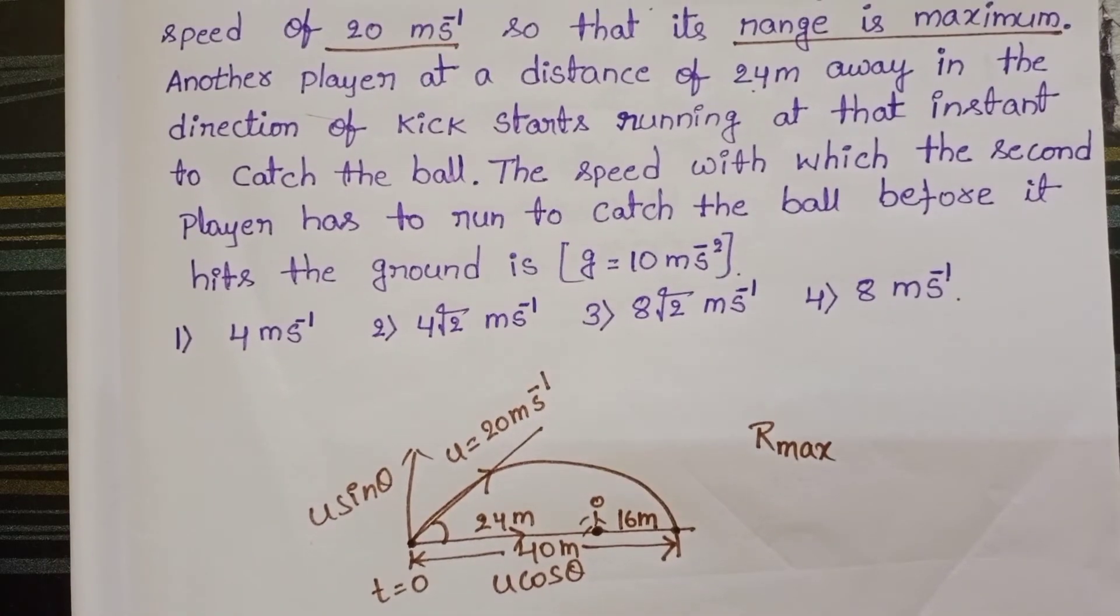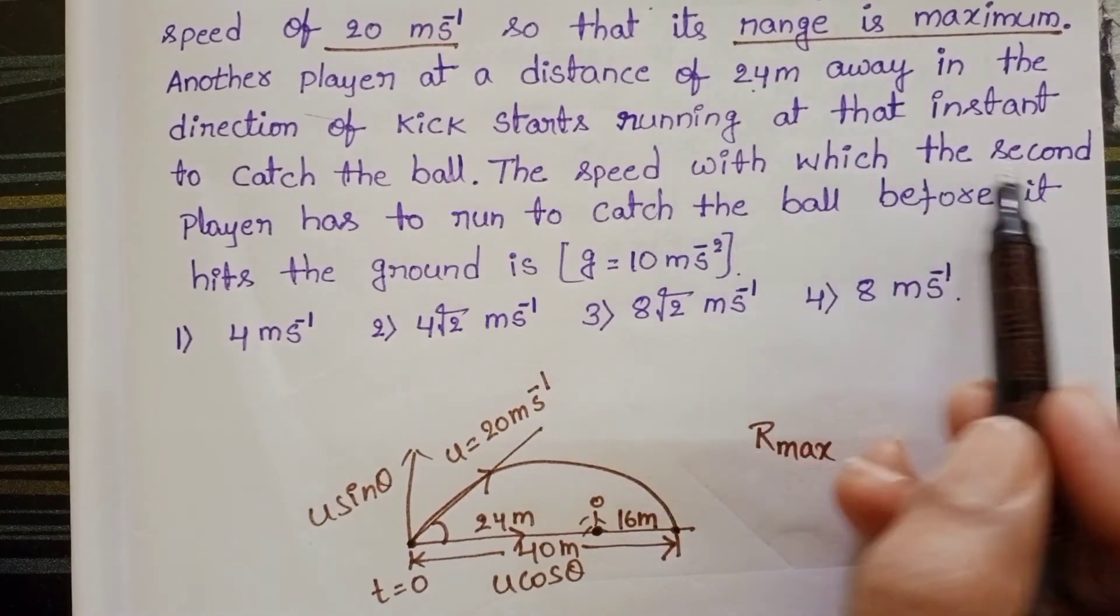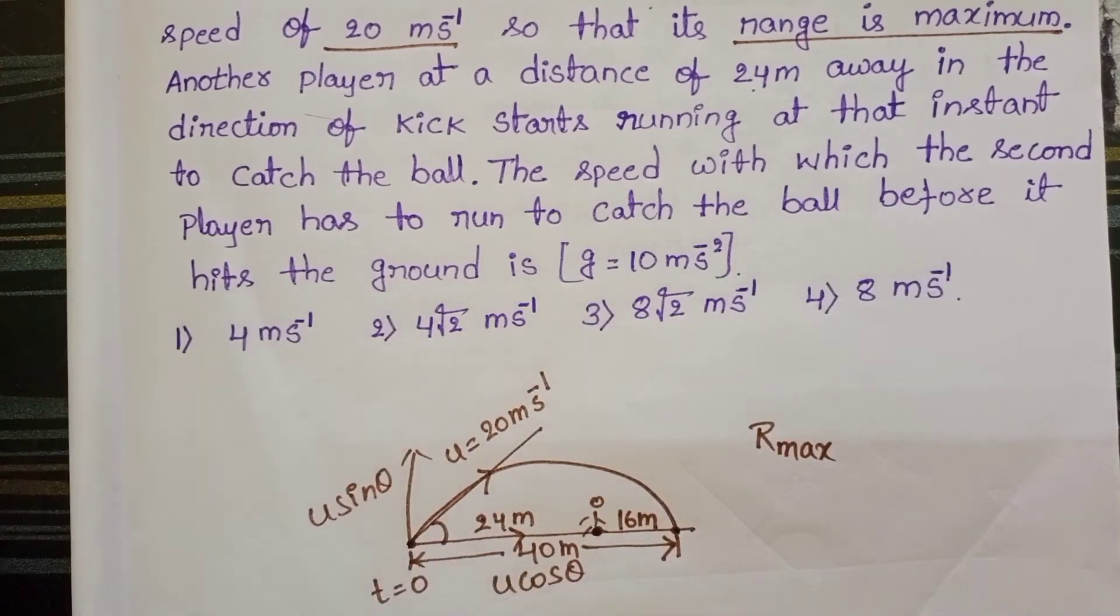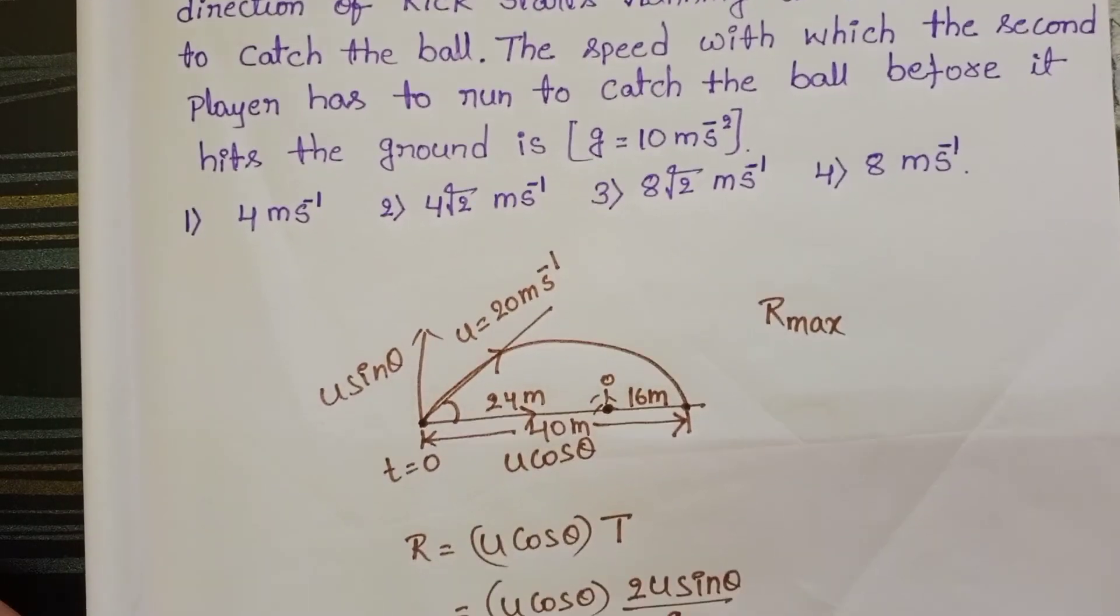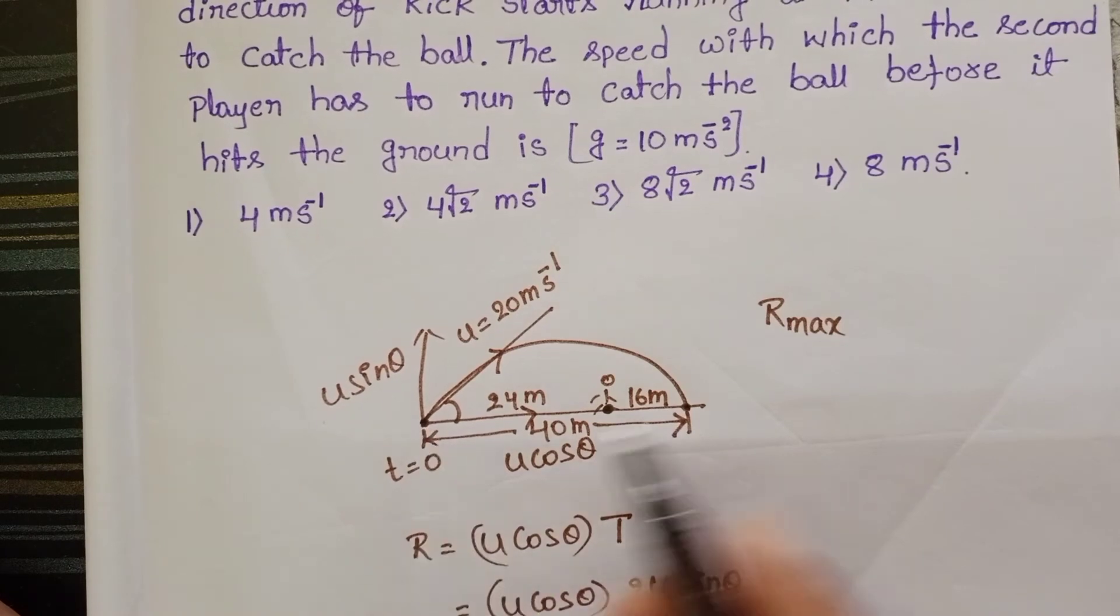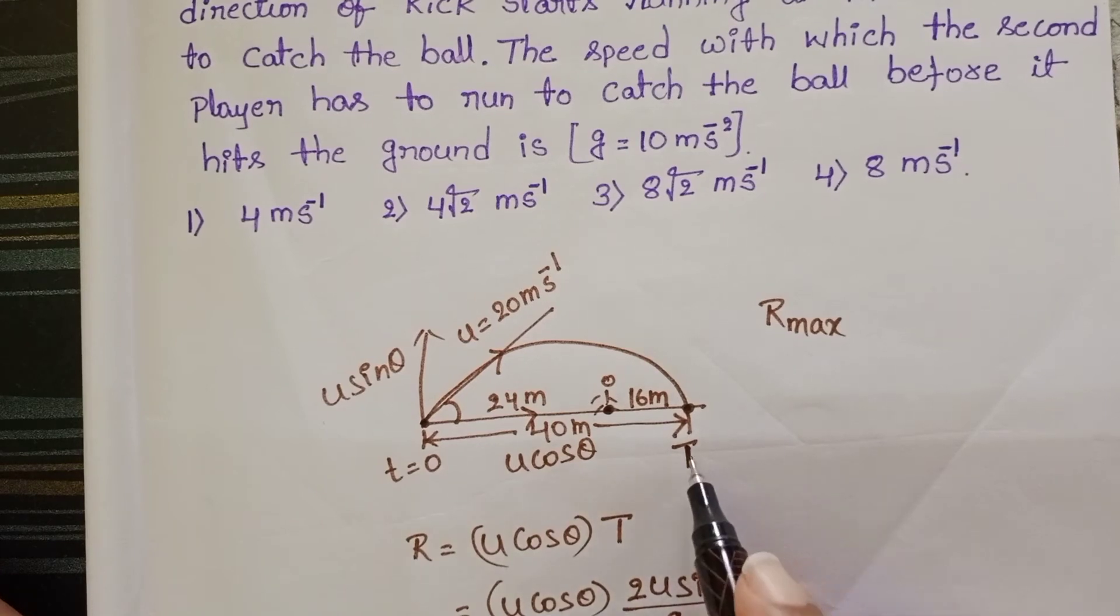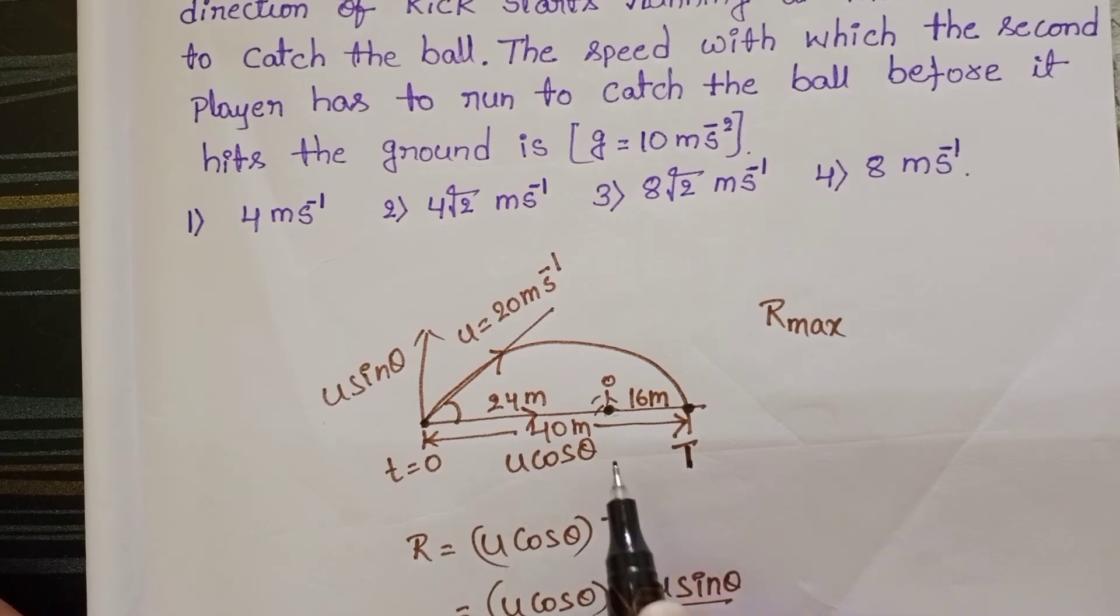So here question is the speed with which the second player has to run to catch the ball before it hits the ground. So from initial position to this point time of flight. So within the time of flight only the second player has to reach this point.